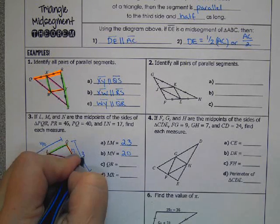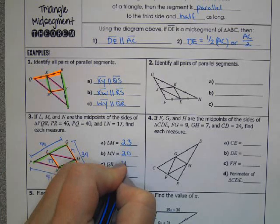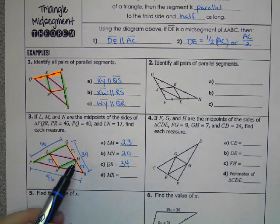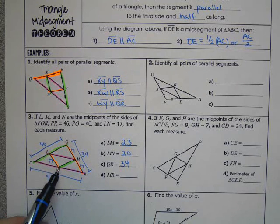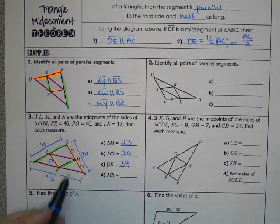And then since M has to be a midpoint of the side, because that's how you create a midpoint, L, N, and M are all midpoints of the sides of the triangle. So MR would be equal to LN, so 17.